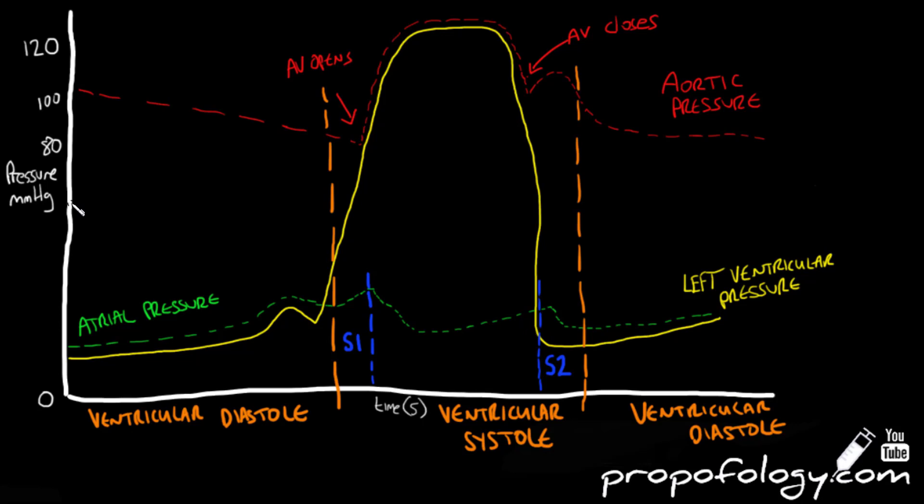The last thing I do when I'm drawing the cardiac cycle is superimposing ECG over the top. The P wave coincides with atrial depolarization and its subsequent contraction as seen in the atrial pressure wave.